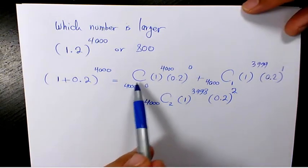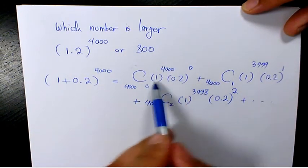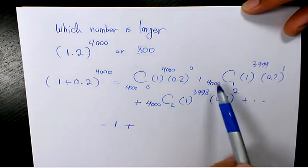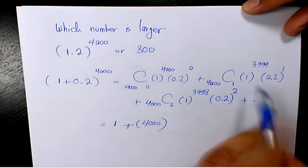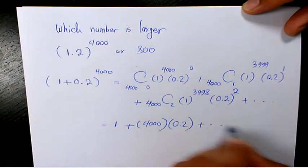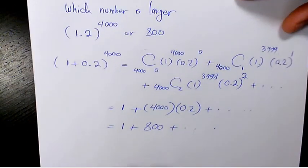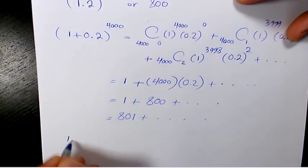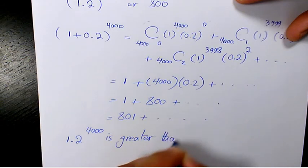As you see here, the first term: 1^4000 is 1, and 0.2^0 is 1, so that's 1. Plus C(4000, 1) is 4,000; 1^3999 is 1; 0.2^1 is 0.2 — so that gives 4,000 × 0.2 = 800. Plus some other numbers. So it's going to be 1 + 800 + some other numbers, which is 801 plus some other numbers. Therefore, 1.2 to the power of 4,000 is greater than 800.